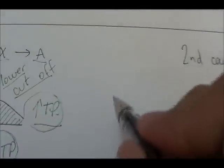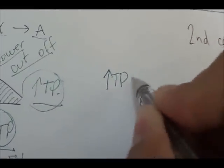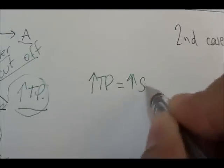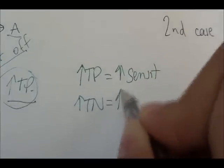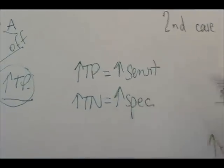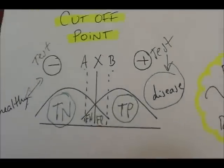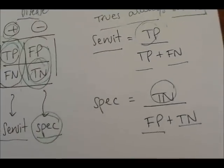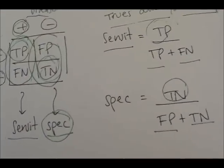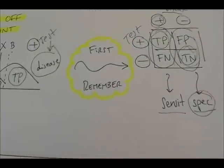To summarize: increasing true positives will increase sensitivity, and increasing true negatives will increase specificity. Try to remember the diagram and these formulas really well. I will be uploading more videos explaining things in an easy way.